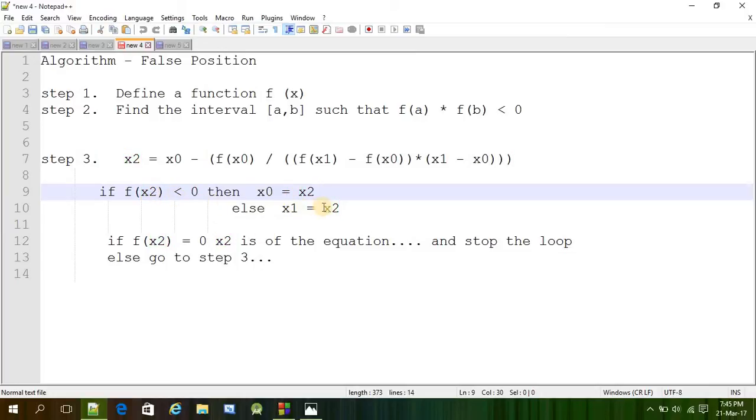And then if f of x2 is equal to 0, that means x2 is the root of the equation. And if it is not the root, then we are going to do step 3 again. Because it is a loop actually. Else go to step 3 again.